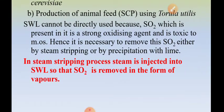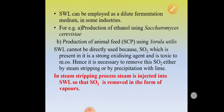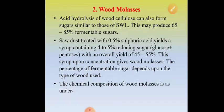In the case of steam stripping, steam is injected into the sulfite waste liqueur so that sulfur dioxide present in it is removed in the form of gas or vapors. This is how sulfite waste liqueur is used as a raw material or source of carbohydrate in fermentation industries.